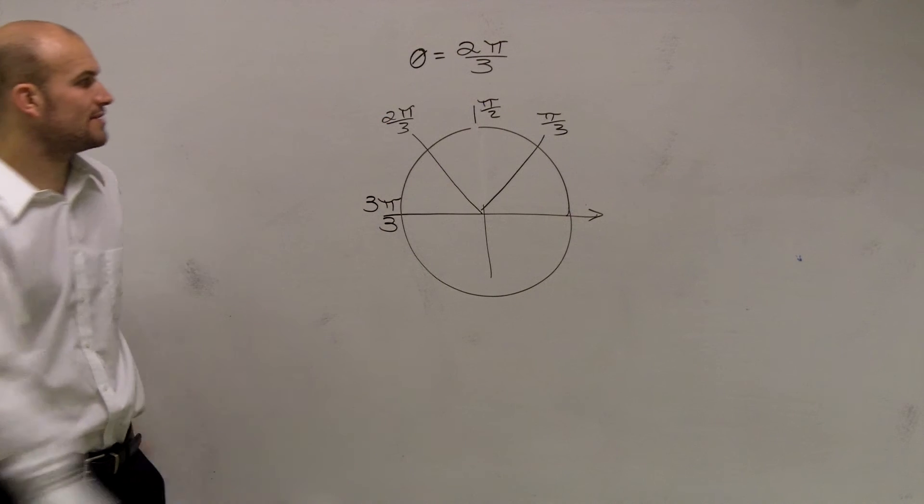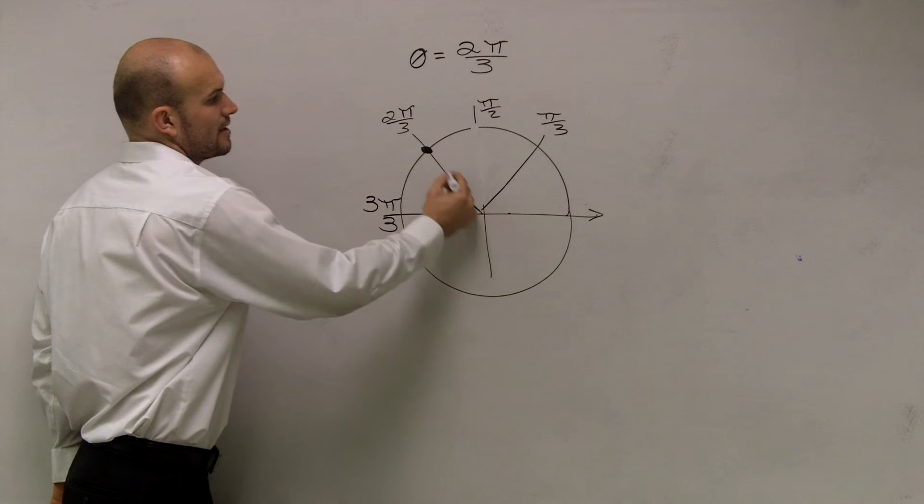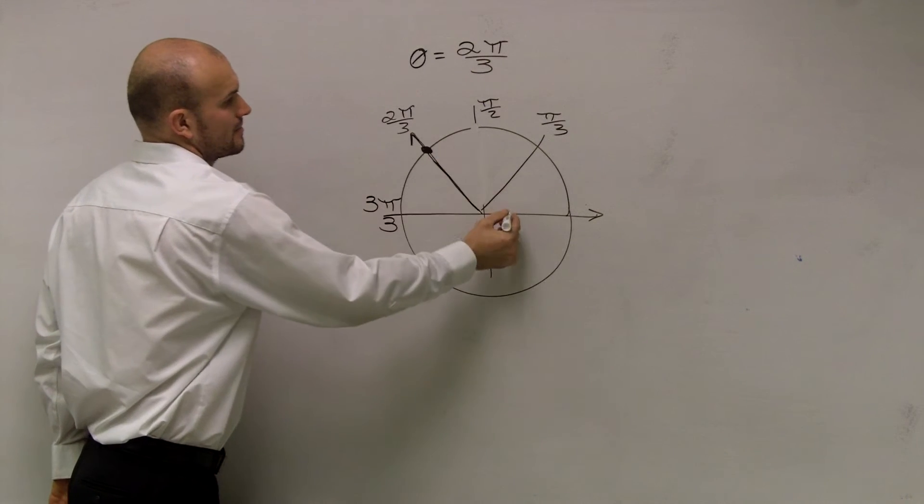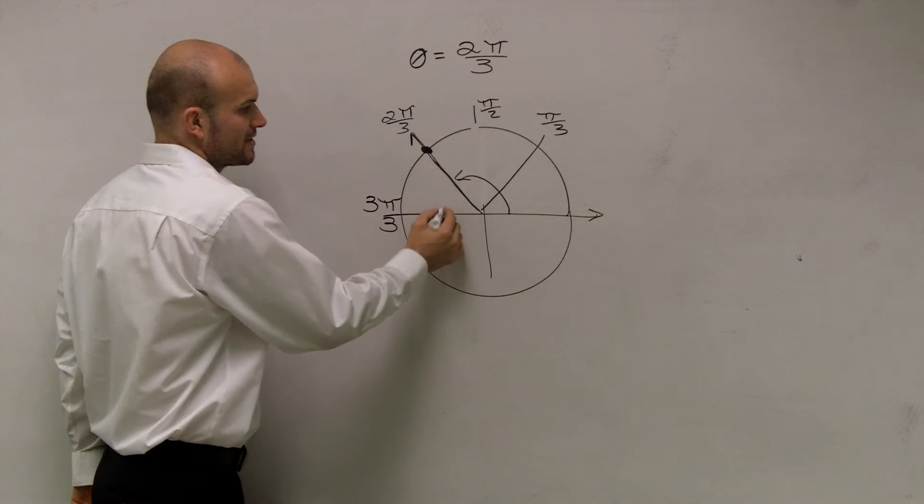So we have 2π over 3. Therefore, we know that here's my point. Here's my initial side, and here's my terminal side. So the angle is right there. What is going to be my reference angle?